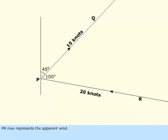PR now represents the apparent wind. Join RQ and this represents the true wind.